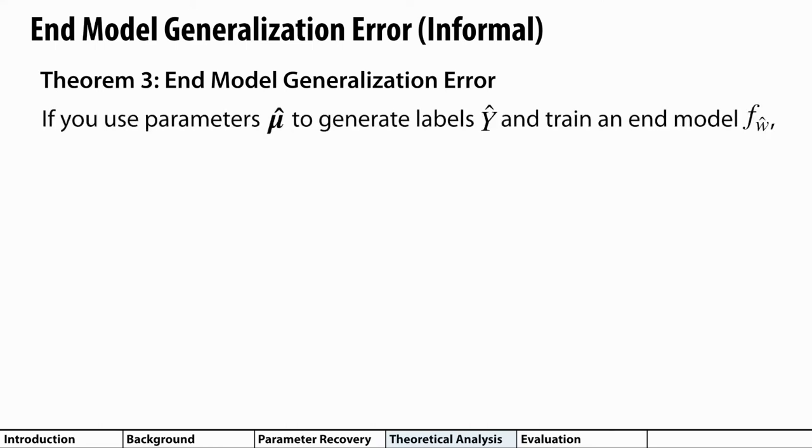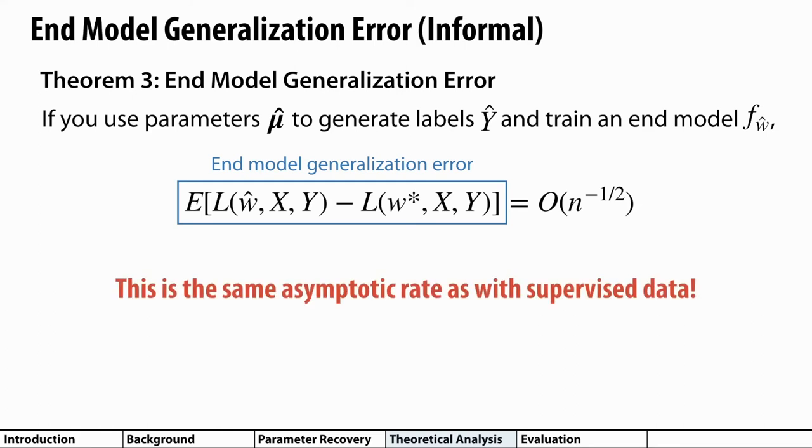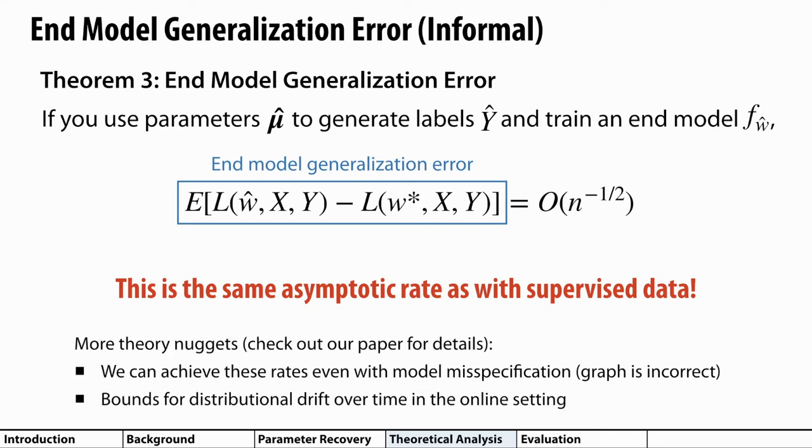Finally, in our third result, we can bound the generalization error of an end model trained using FlyingSquid. Theorem three states that if you use the estimated parameters mu hat to generate probabilistic training labels y hat, and then you use those training labels to train an end model with weights w hat, the generalization error of this end model, highlighted in blue on the left, will scale at the rate on the right, which is again the inverse of the square root of the number of unlabeled data points. The cool thing about this result is that it's actually the same asymptotic rate as if we were training with ground truth labels the whole time, but without us needing to manually label a bunch of data. Check out our paper for more details and more theoretical results, or ask us about them at the Q&A session.